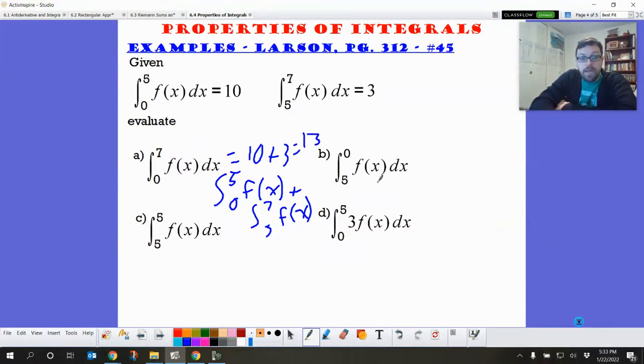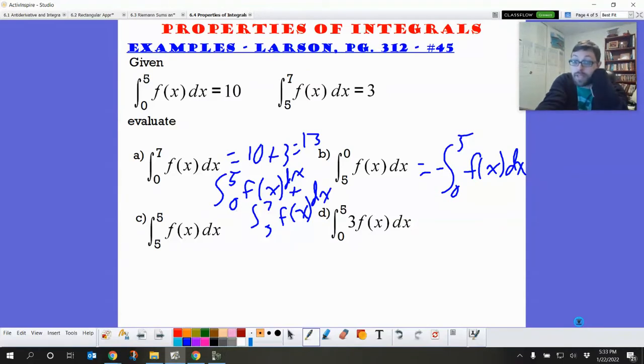They gave me from 0 to 5. This is 5 to 0. So that means I need to do the opposite. So this is the opposite value of 0 to 5 f of x dx. So it'll be just the negative value of that. So that's just negative 10. All right. This is another one. It's going from 5 to 5. And if it's going from one thing and ending at the same spot, that's just a perfectly straight line, which has no area. So that's 0.